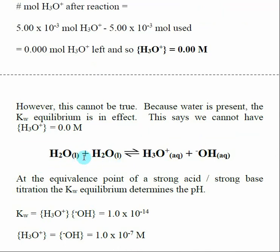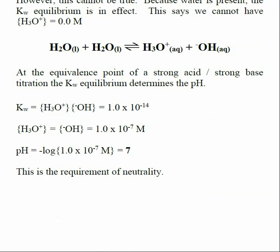Even though we're looking at an acid-base reaction, water is present, so the Kw equilibrium is also present. When we look at the Kw equilibrium, hydronium and hydroxide are both involved. In any equilibrium, we cannot have a zero concentration of any of the species — so it's impossible to have a zero concentration of hydronium when water is present. What happens is the Kw expression takes over in determining the concentration of hydronium in our completely neutralized solution, so Kw determines our pH at the equivalence point.